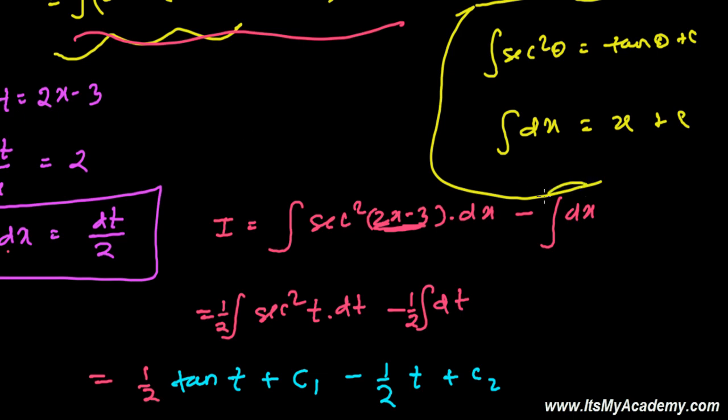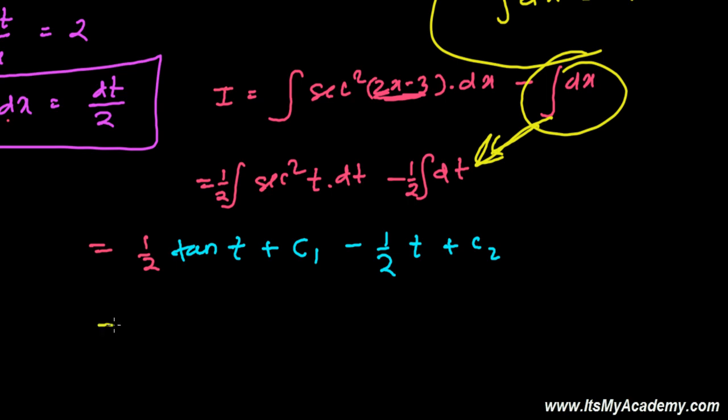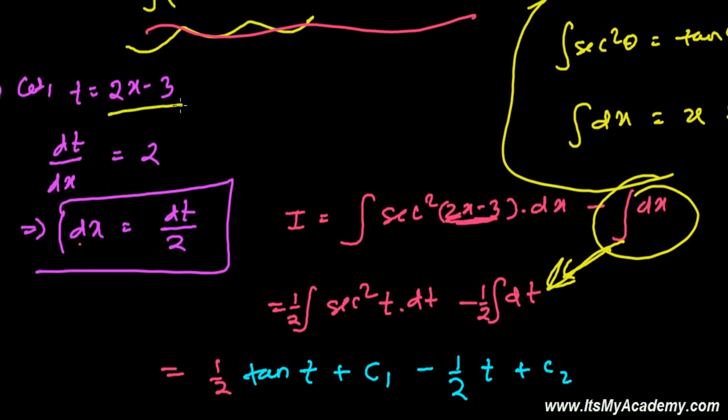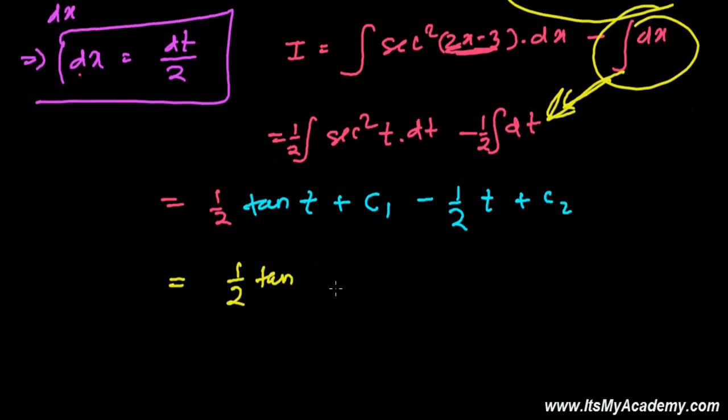And one more thing, let me tell you, if you had not changed this into this format, then also you can solve this question, all right? No need to convert this for this particular thing, but it's better if you convert, also you'll get the same thing. All right, now let's put all the values. It's 1 by 2 tan t. T, what we had supposed, that t is, t is 2x minus 3, so I'm just putting the original value of t, that is 2x minus 3.